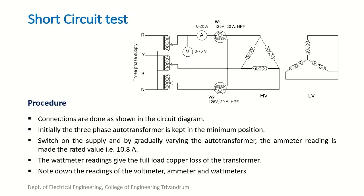Procedure for doing the short circuit test: connections are done as shown in the circuit diagram. The autotransformer is kept in the minimum position. Switch on the supply and gradually vary the autotransformer to make the ammeter reading equal to 10.8 ampere, which is the rated value on the HV side. The corresponding wattmeter readings will give the full load copper loss of the transformer. Note down the meter readings.